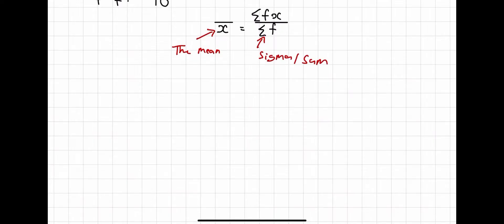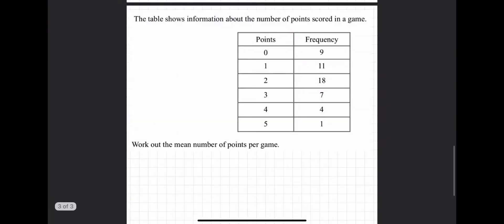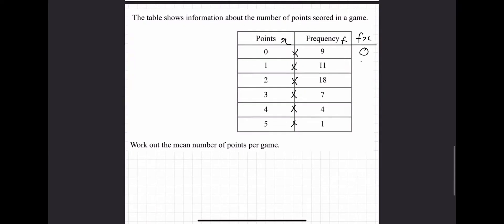Now let's look at another question using this notation. The table shows information about the number of points scored in a game — work out the mean number of points per game. Points are x and frequency is f. We write our fx column by multiplying: 0 times 9 is 0, 1 times 11 is 11, 2 times 18 is 36, 3 times 7 is 21.